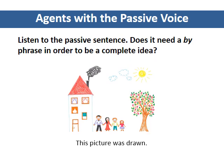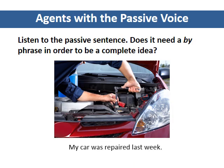This picture was drawn. This sentence is also incomplete. The agent is not obvious because almost anyone can draw a picture. We do not know who drew the picture, so we need to include the by-phrase in order to make the meaning complete. My car was repaired last week. This sentence is complete. We do not need the by-phrase because we know that mechanics repair cars. The agent is obvious.